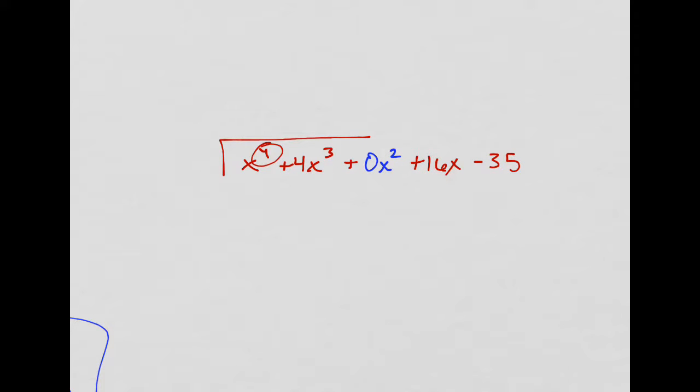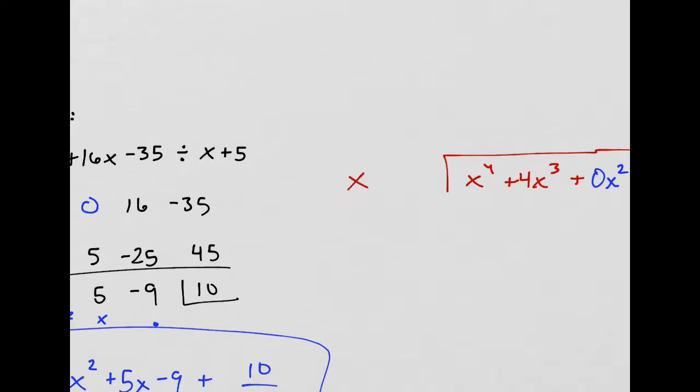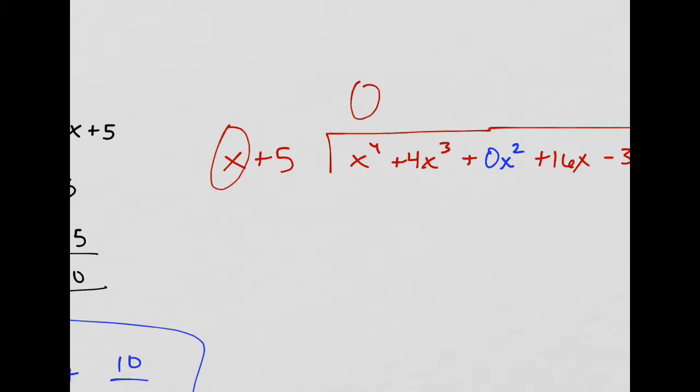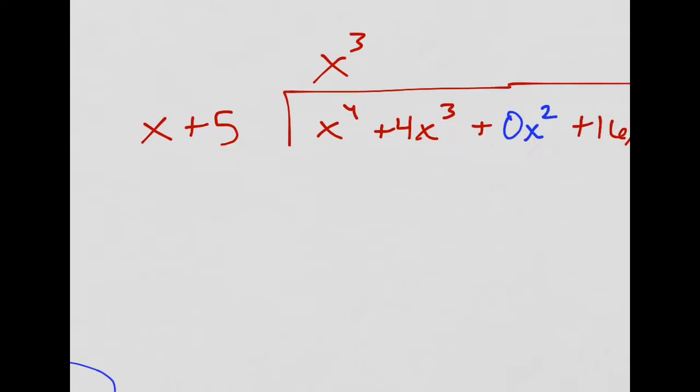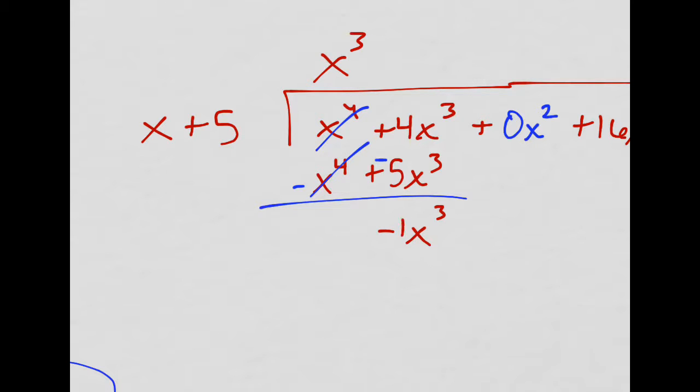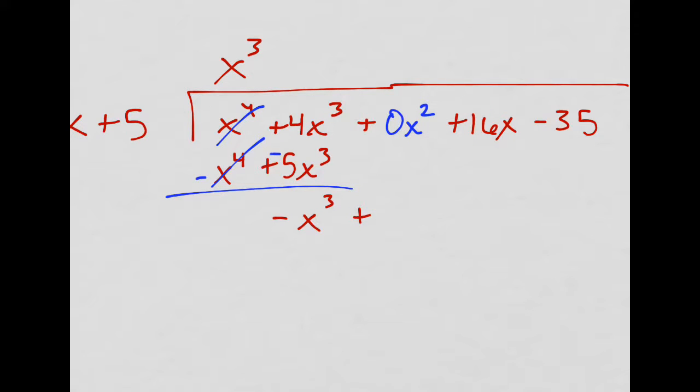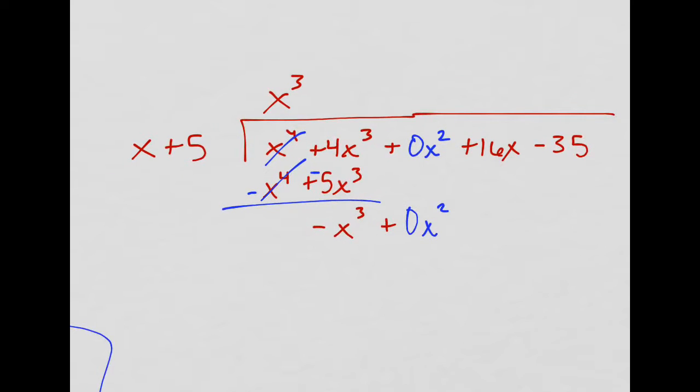So now I'm going to check. 4, 3, 2, 1, 0. Cool. And then the divisor, x plus 5. What times x gives me x to the fourth? Just x to the third. And then I get x to the fourth down there. x to the third times 5. That's plus 5x to the third. Change the sign to subtract. That goes away. And then I have just negative x cubed or negative 1x cubed plus 0x squared.